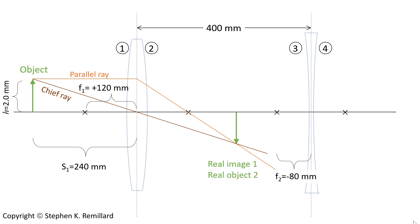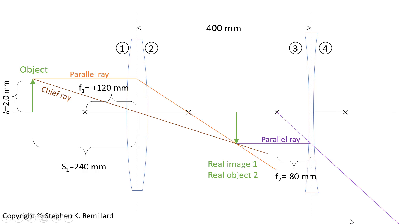Drawing rays from this new object through lens 2: a ray proceeds parallel to the optic axis until it hits the principal plane of lens 2. Since it's a diverging lens, it diverges. To find the angle, you backtrack that ray to the focal point — it can't proceed to the rear focal point (that would be a converging lens), so it proceeds to the front focal point as a virtual ray (dashed line), and the real light diverges outward. You can also draw the chief ray through the dead center. Where the two rays intersect is the new final image.